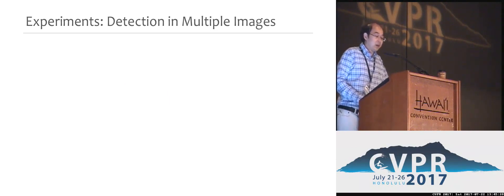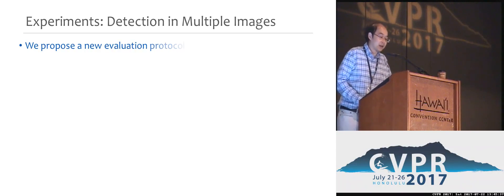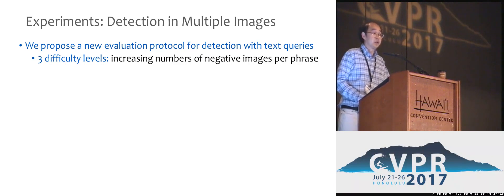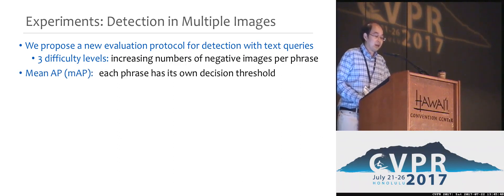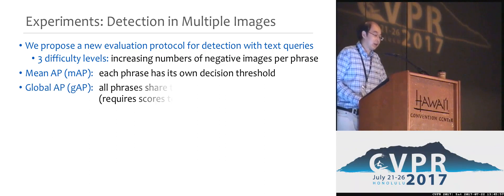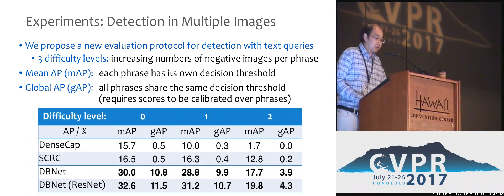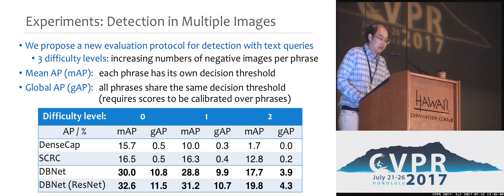For detecting a non-predefined number of objects on multiple images with text queries, we didn't find any existing results in previous work, so we propose a benchmarking protocol. This protocol includes three difficulty levels and uses two types of average precision for evaluating algorithm performance. The mean average precision takes each text phrase as a category and allows each category to have its own decision threshold. In contrast, the global average precision uses the same decision threshold for any phrase, enabling zero-shot detection for new phrases without worrying about the decision threshold.